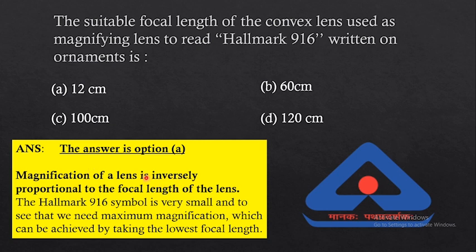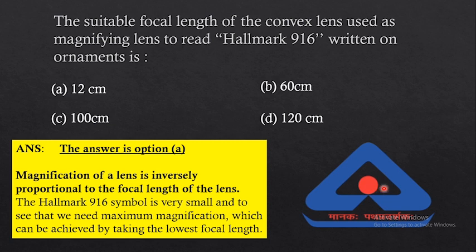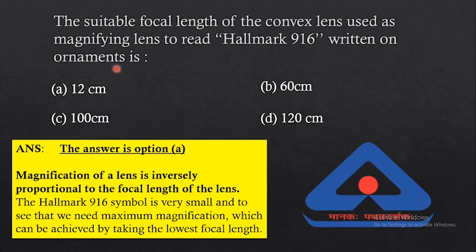If you decrease the focal length, magnification should increase. Since the hallmark symbol is small, we need high magnification, so we should have the least focal length for maximum magnification. Among the options, the least focal length is option A — 12 centimeters. So the least focal length gives maximum magnification, and the answer is option A, 12 centimeters.